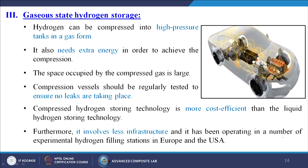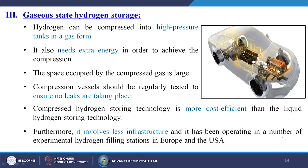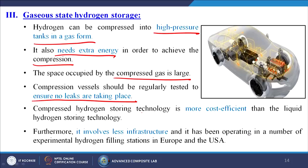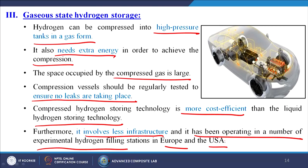Gaseous state hydrogen storage is simply like the gas cylinder in our homes — hydrogen is compressed into high-pressure tanks in gas form. It also needs extra energy to achieve compression. The space occupied by the compressed gas is large. Compression vessels should be regularly tested to ensure no leaks, otherwise they can blast. Compressed hydrogen storage technology is more cost efficient than liquid hydrogen storage technology, involves less infrastructure, and has been operating at a number of experimental hydrogen filling stations in Europe and the USA. Nowadays people are attempting to run automobiles, cars, and buses on hydrogen gas.